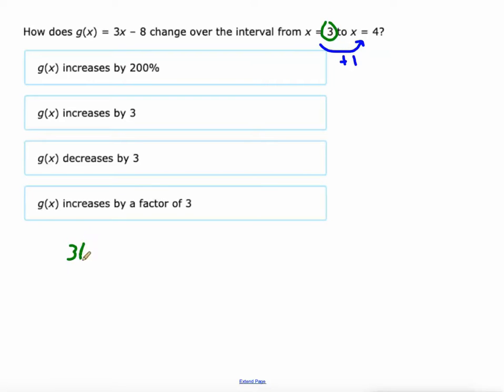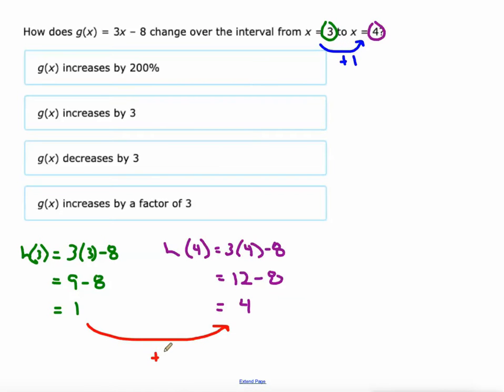So let's do 3 times 3 minus 8. That would be h of 3. All right, which would be 9 minus 8, which would be 1. Then let's figure out when x is 4. So we're going to do h of 4 equals 3 times 4 minus 8, which is 12 minus 8. And I know you can probably do this math in your head. There we go. So the question is, what happened over this increase of 1? What happened to the value of the function? It increased by 3. G of x increases by 3. Do you think that 3 right there has anything to do with it?